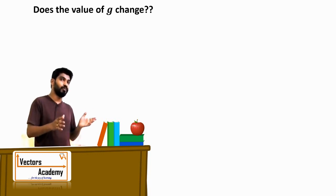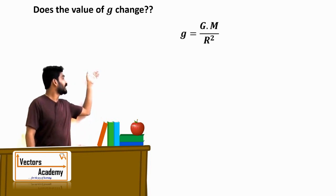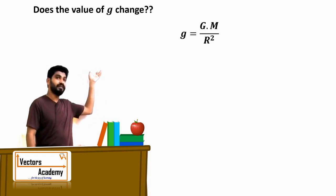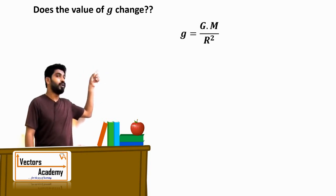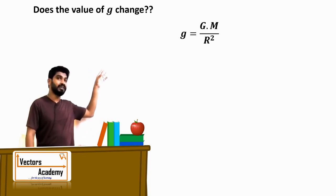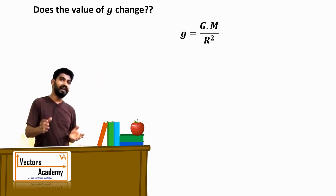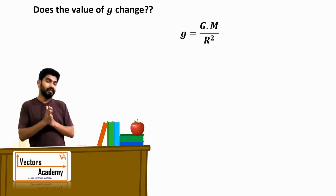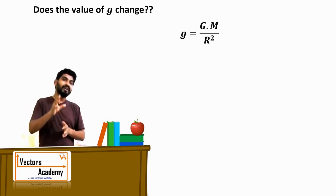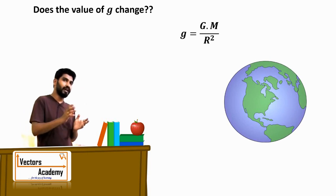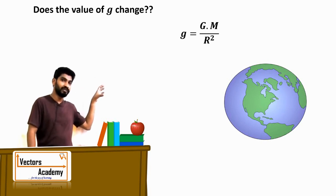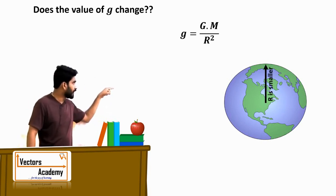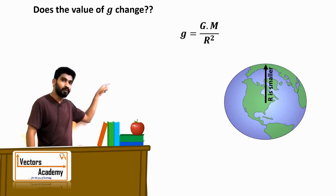The answer lies in the formula of g itself. Acceleration due to gravity equals G, the universal gravitational constant, into M upon r squared, where M is the mass of the earth and r is the radius of the earth. The problem is the earth is not exactly spherical — it bulges towards the equator and is flatter towards the poles. Hence the value of r is smaller at the poles and greater at the equator.